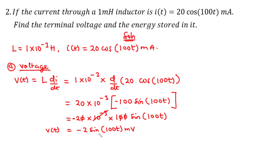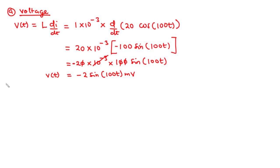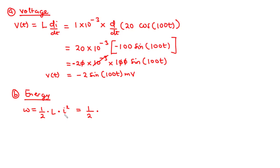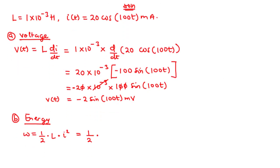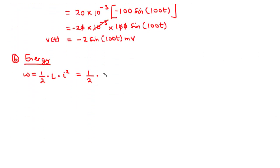So the terminal voltage is −2·sin(100t) millivolts. Notice the current was in milliamperes, so the resulting voltage is in millivolts. Now let's find the energy stored in the inductor. The energy is given by w = ½·L·i², where L = 1 × 10^(−3) henries.